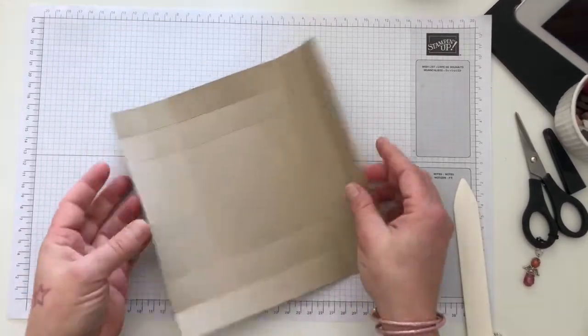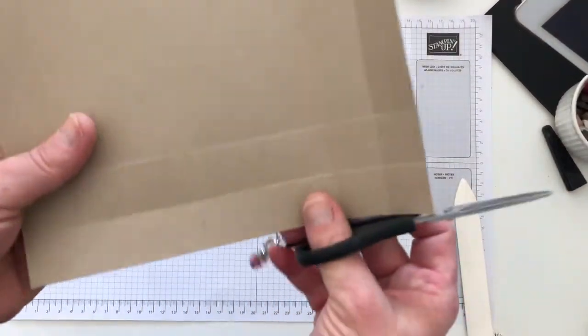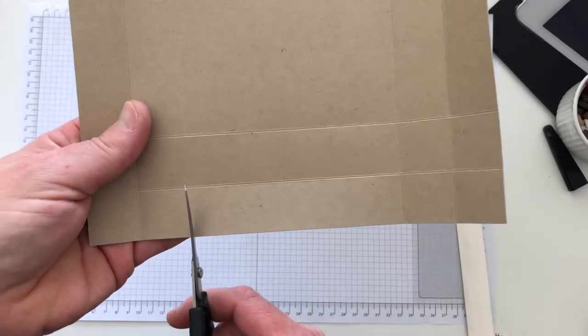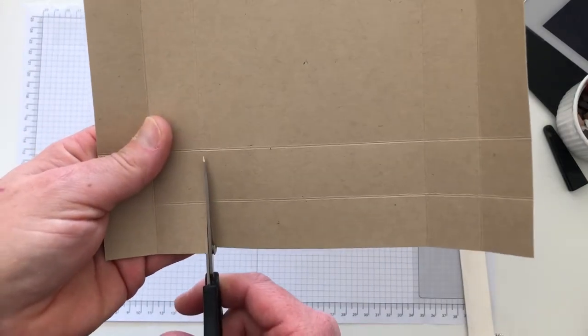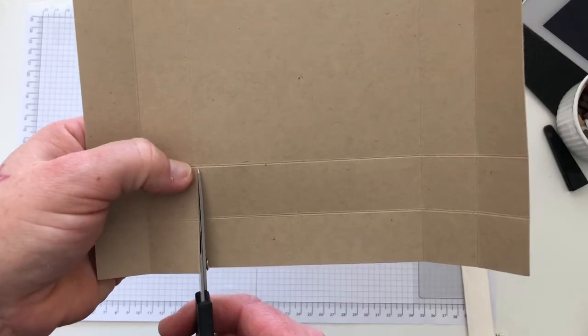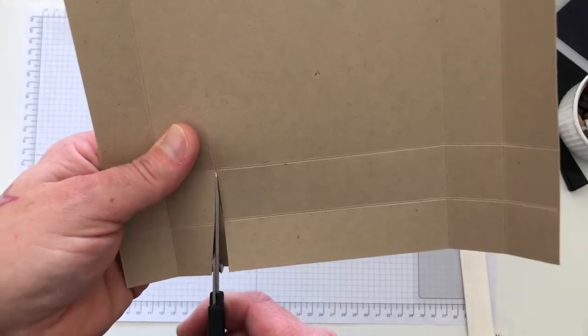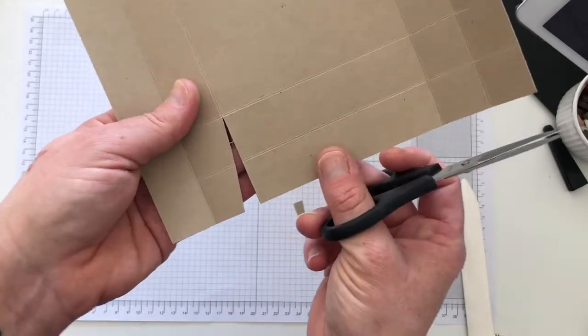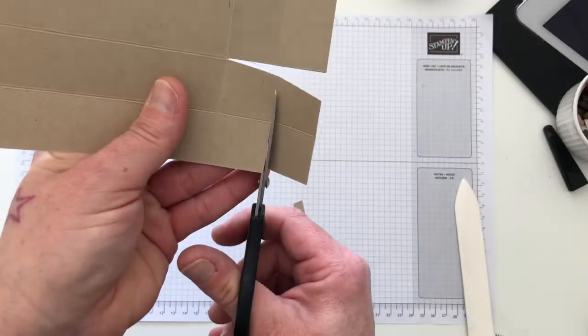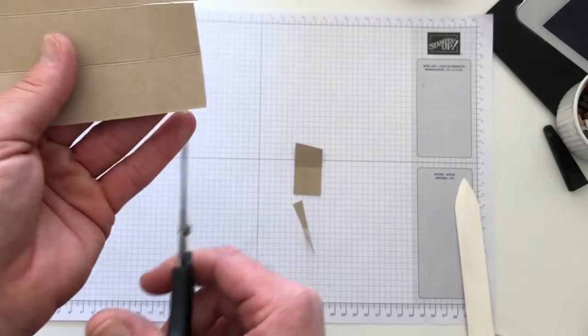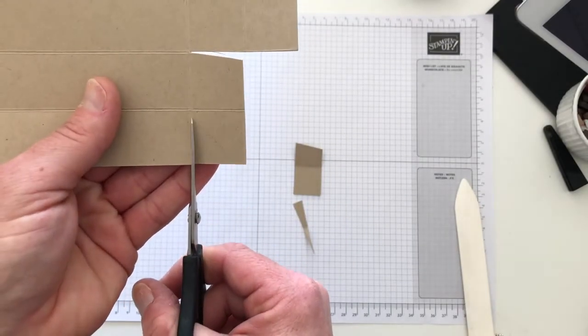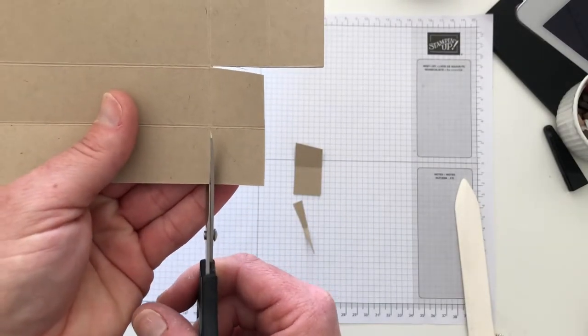Now I've just burnished all them, now we're going to trim. So I'm going to cut up the score line to that second score line, angle like that, trim off, cut down that score line to the first score line.